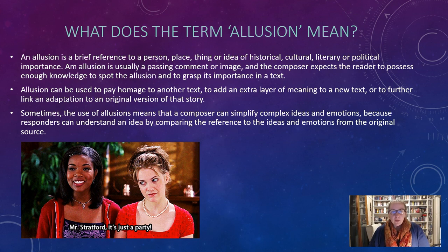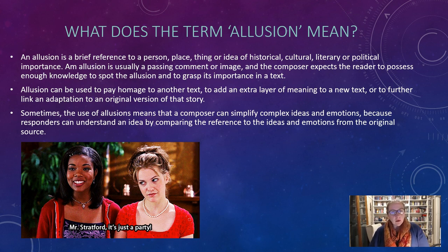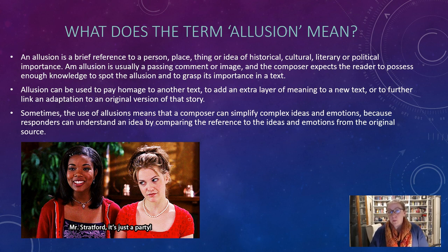So what does the term allusion mean? An allusion is a brief reference to a person, place, thing, or idea of historical, cultural, literary, or political importance. Really what an allusion is, is when a new text quickly references something from an old text, or an old idea, or an old person that may have passed away — like they might reference another author or filmmaker.